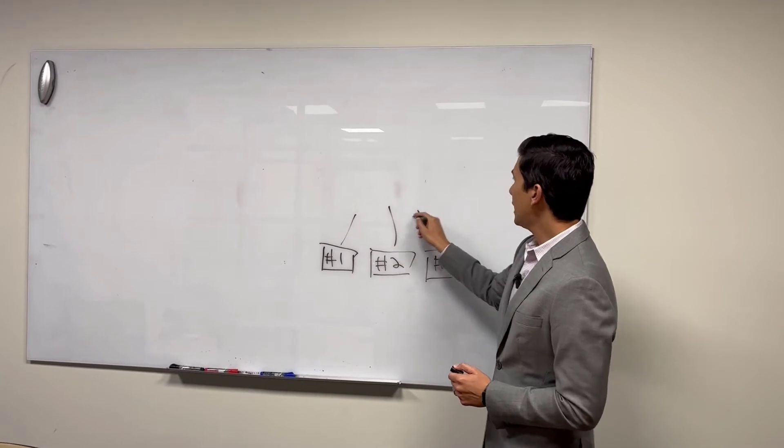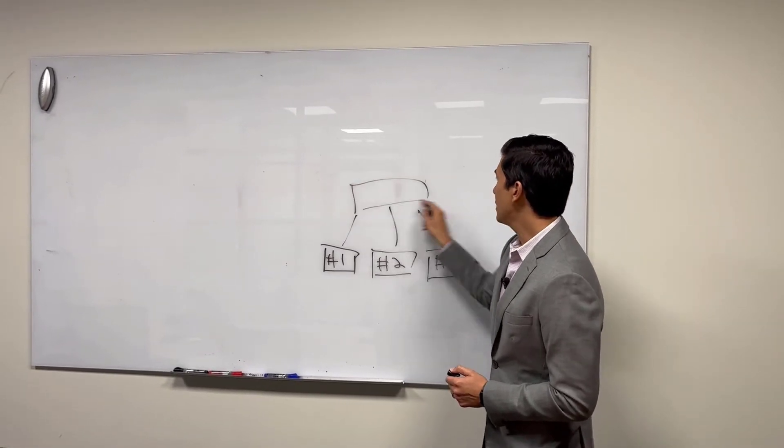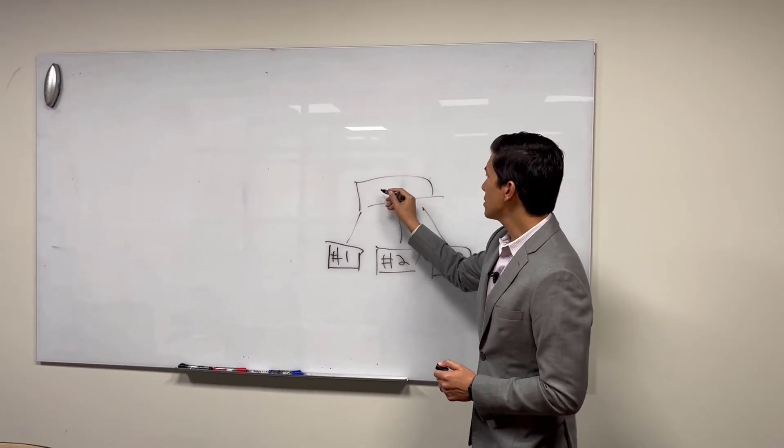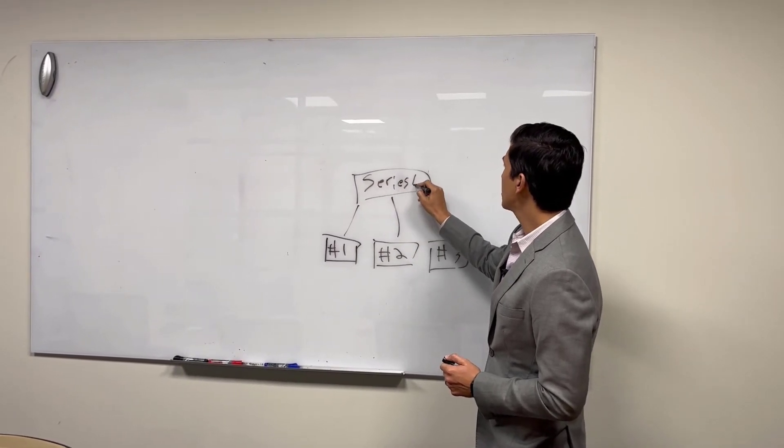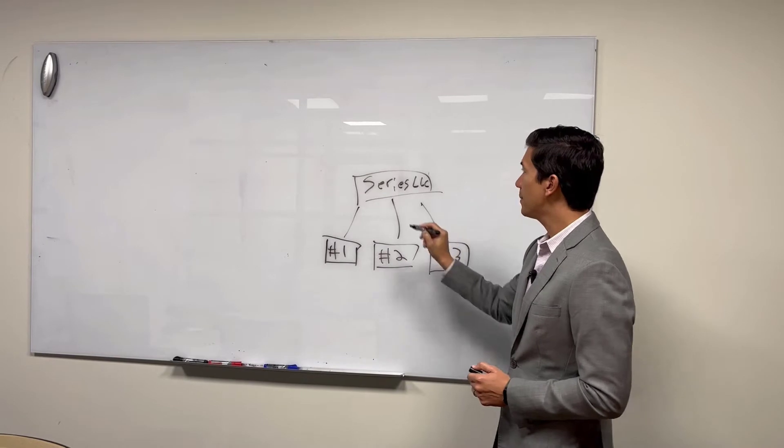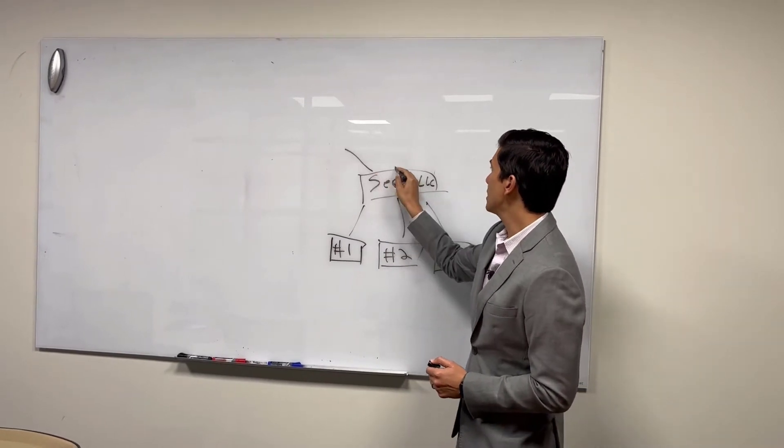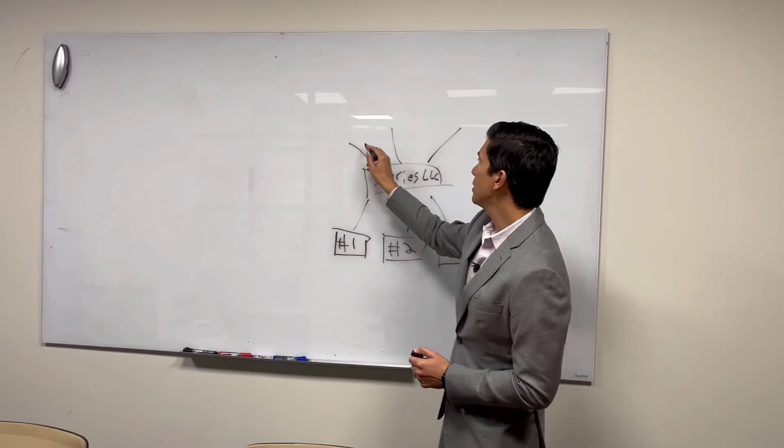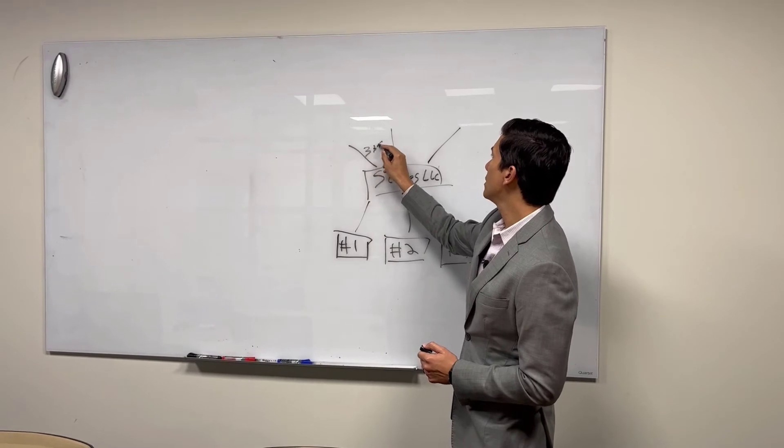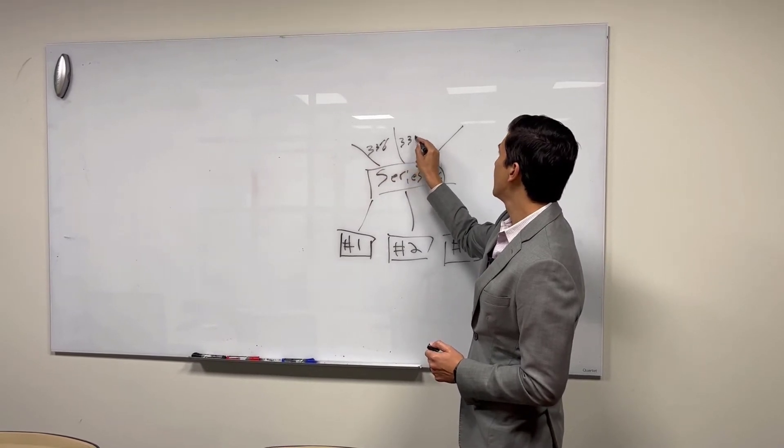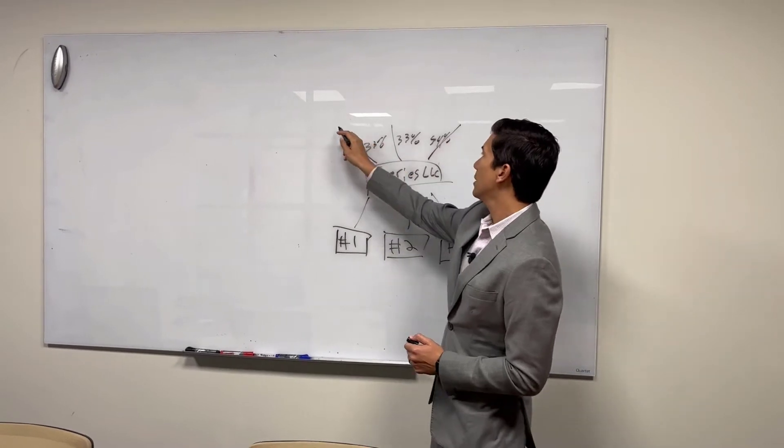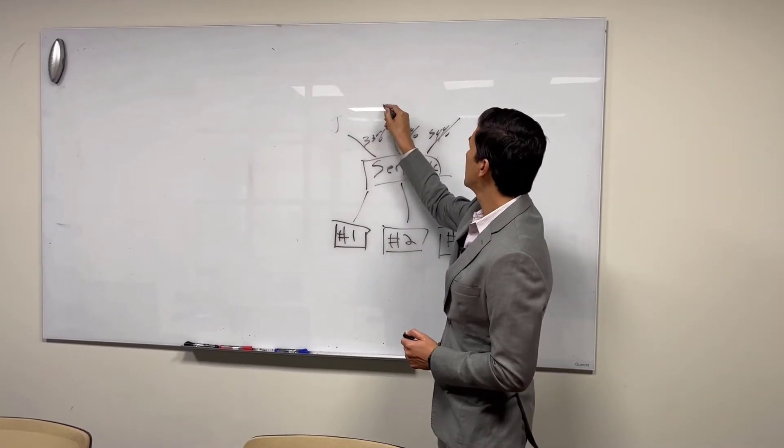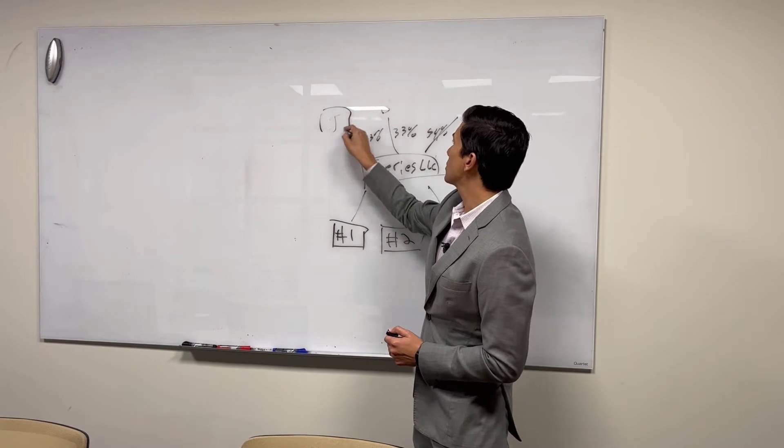And so, all of these can relate back to one parent entity, and this is going to be your series LLC here. Now, this series LLC can be owned, we'll call it 33% and 34% by these individuals.